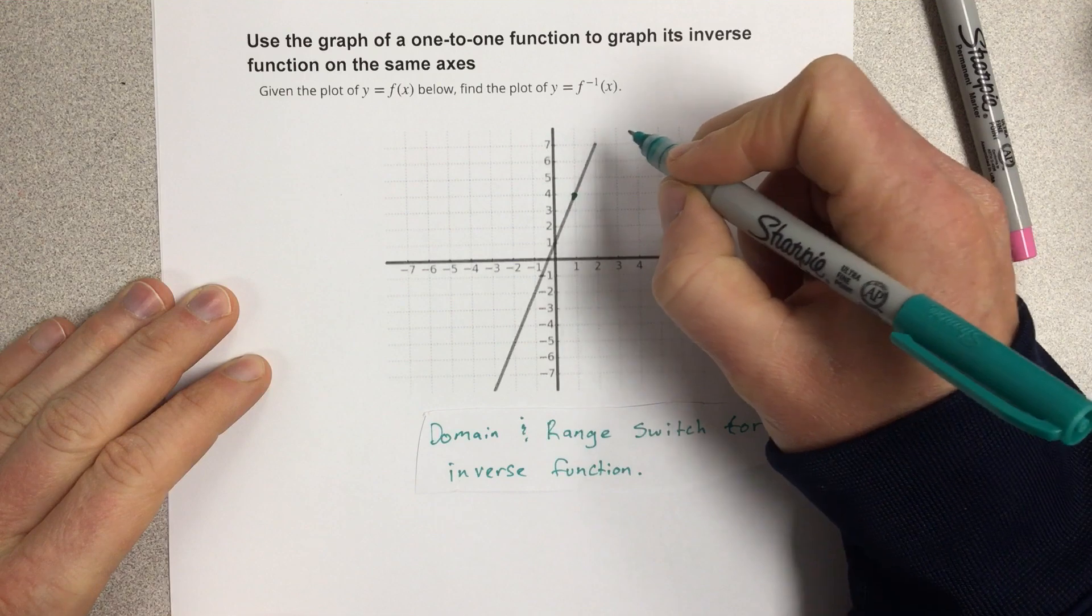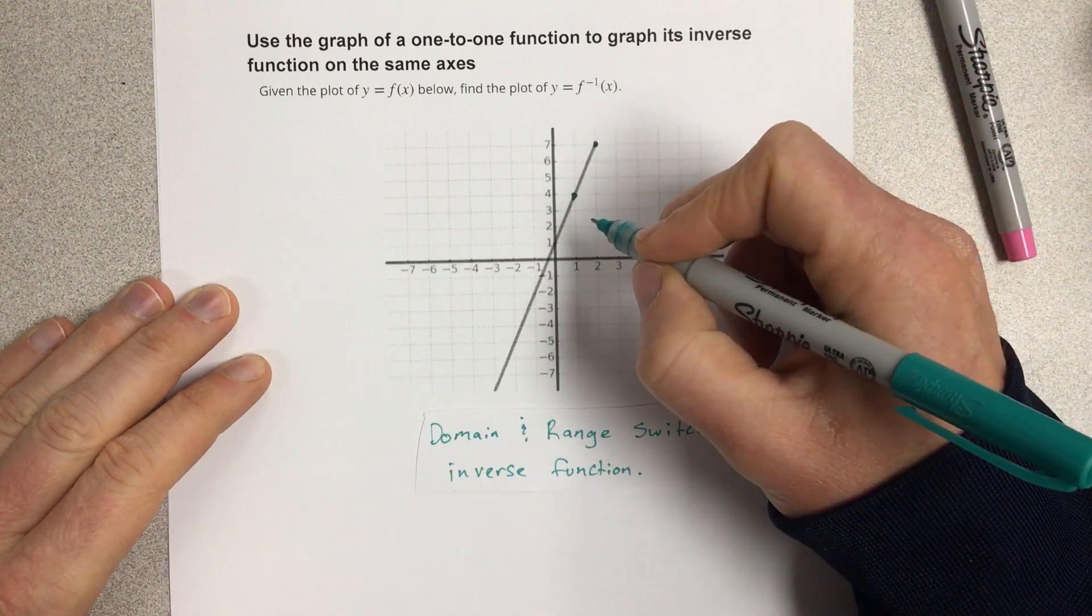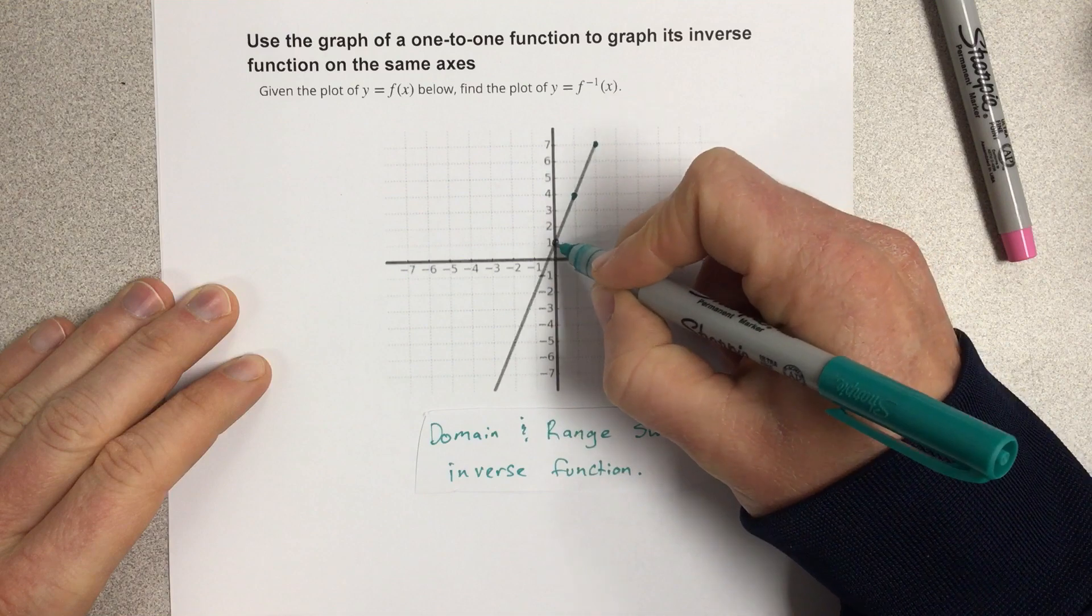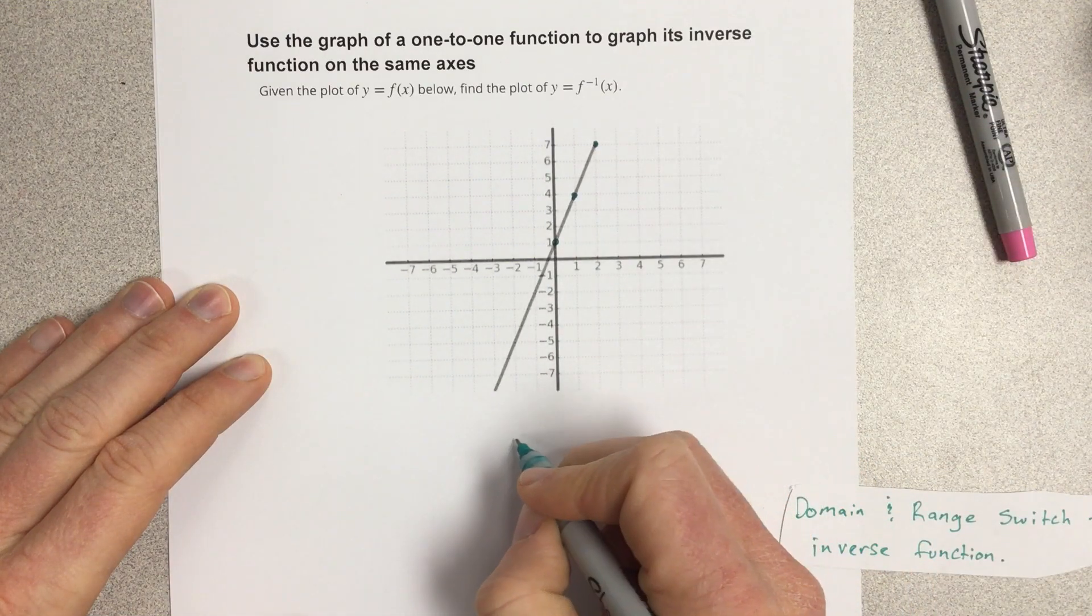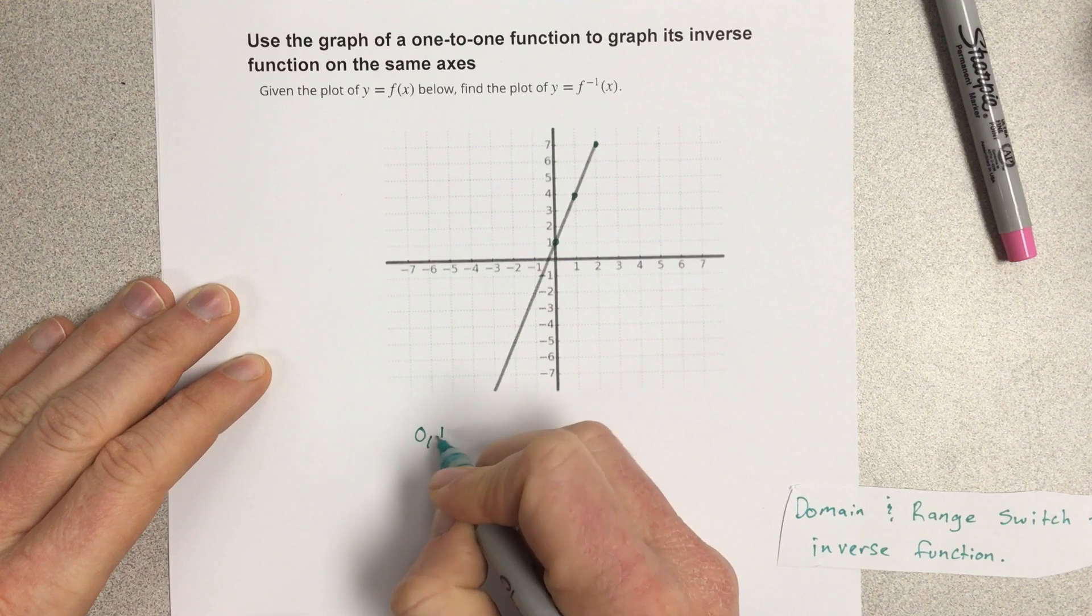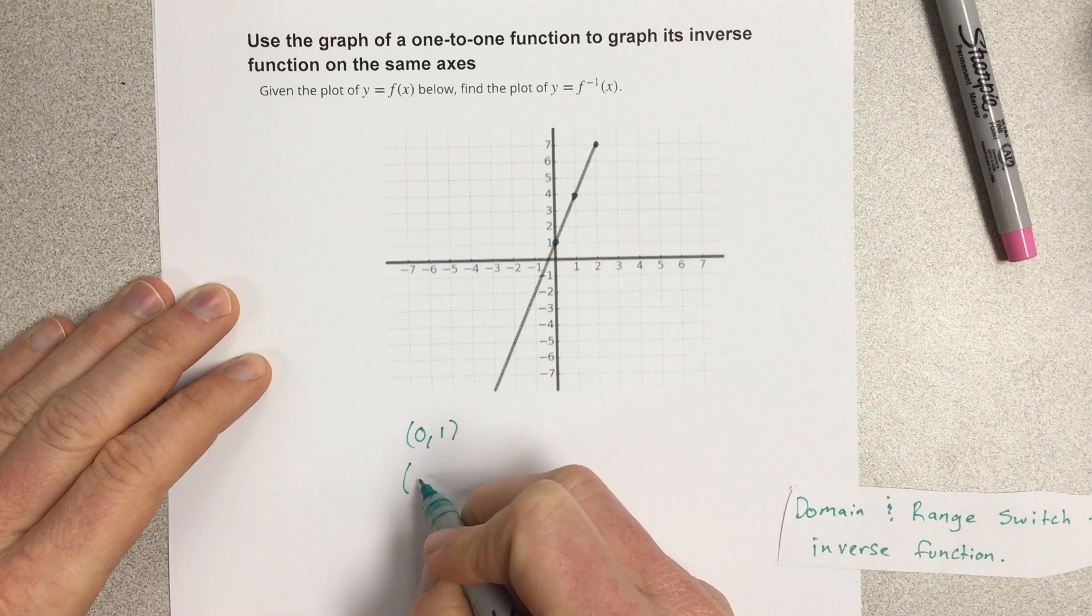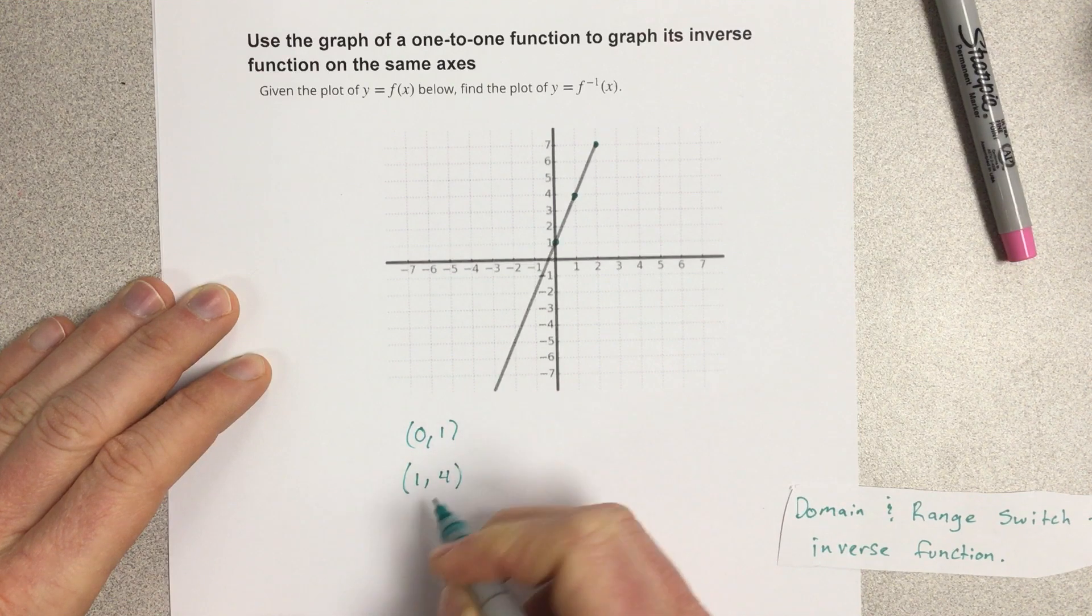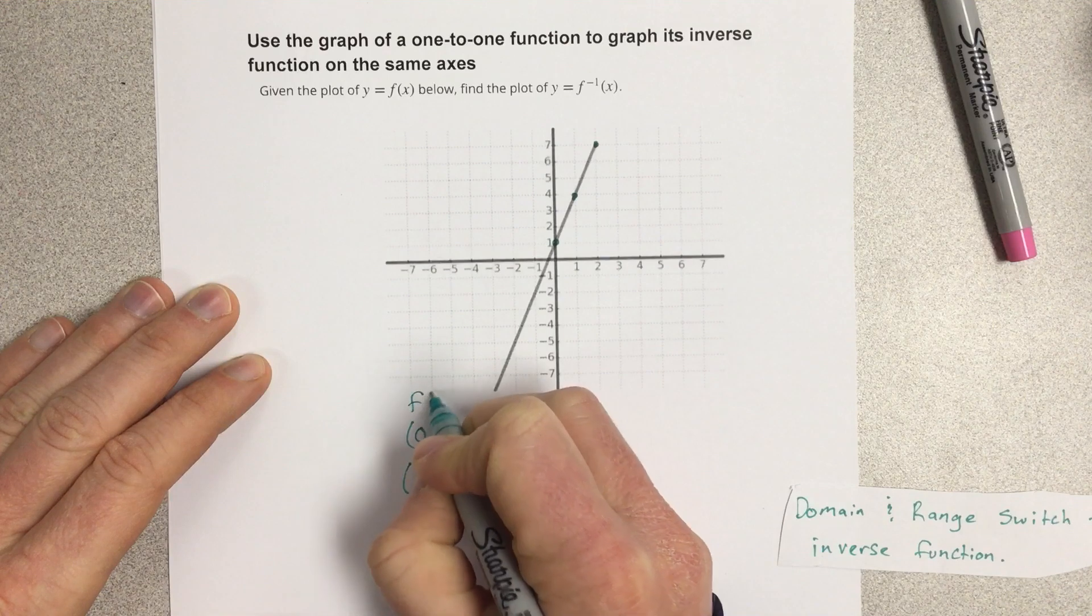That's 1, 4. This is 2, 7. This is 0, 1. So I'm going to write 0, 1, 1, 4, and 2, 7 for my original function. This is the f of x coordinates.